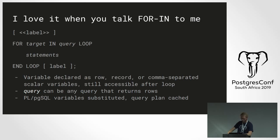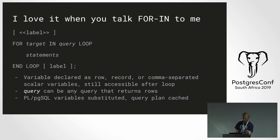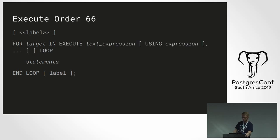You can also have a FOR IN QUERY loop. This is typically used to loop through query results — your target variable will be assigned each record or row returned by that query. You can also have multiple comma-separated variables as the target, and each one will be assigned the value of the corresponding field positionally. In this form, you can use your variables directly in the query without needing FORMAT or EXECUTE, and the query plan is cached so your iterations are quicker.